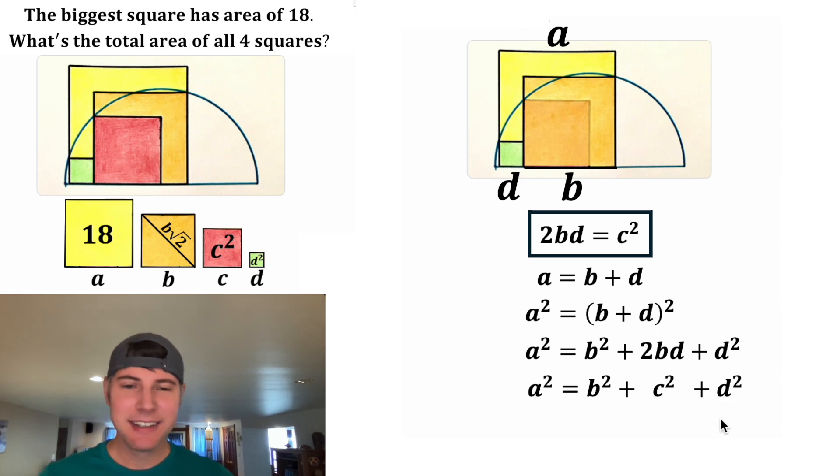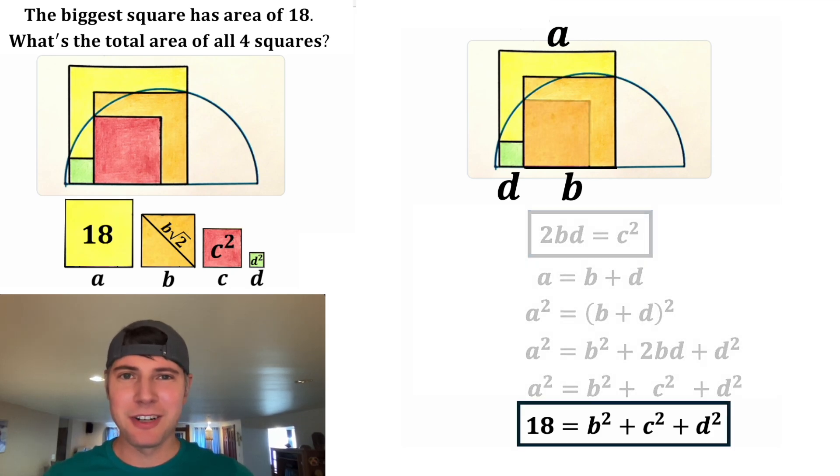That is elegant. And then we know A squared is equal to 18. So we can say 18 is equal to B squared plus C squared plus D squared. Well, this is the sum of our remaining three squares. This is super important. Let's put a box around it.